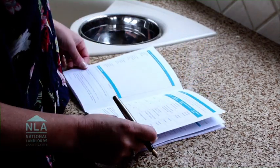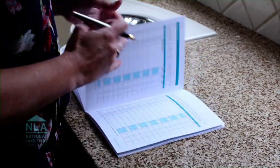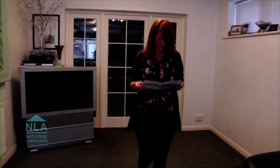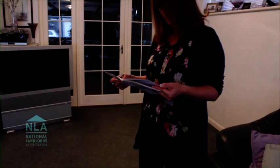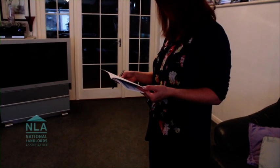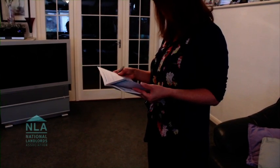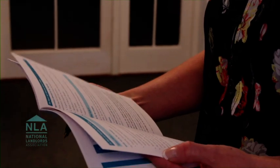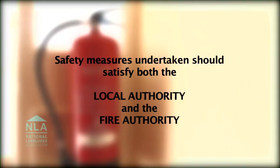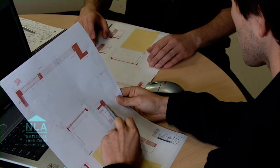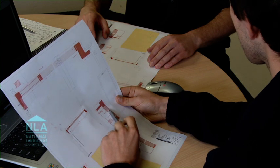This covers the common areas of a residential property and works may be required to minimise any risks identified. Although the two pieces of legislation mentioned overlap, which at times can be confusing, essentially the safety measures undertaken should satisfy both the local authority and the fire authority. They should have established an effective working arrangement so it is clear which authority will take the lead in which types of property. Check with both locally before starting work.